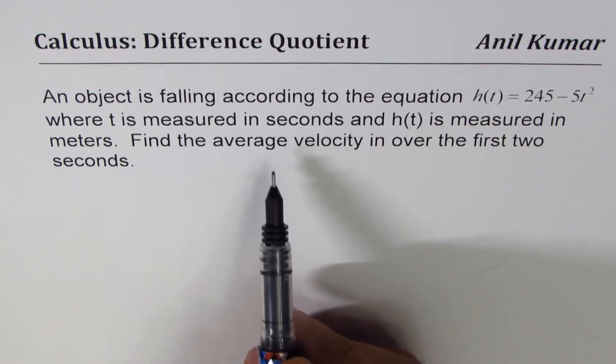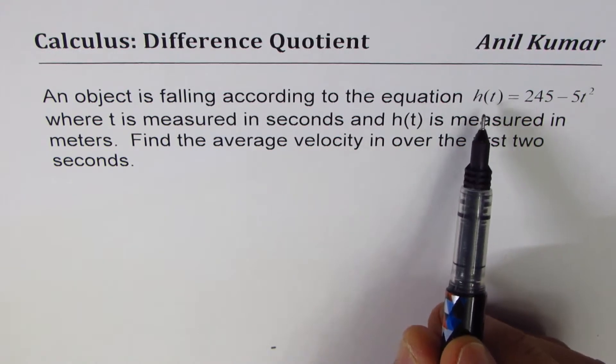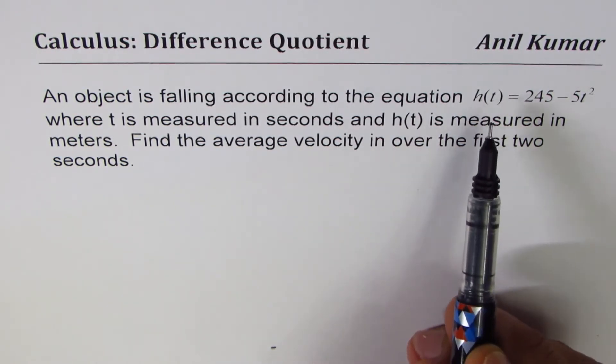Now we need to find the average velocity and we are given height, which is position. Velocity is rate of change of position, correct?